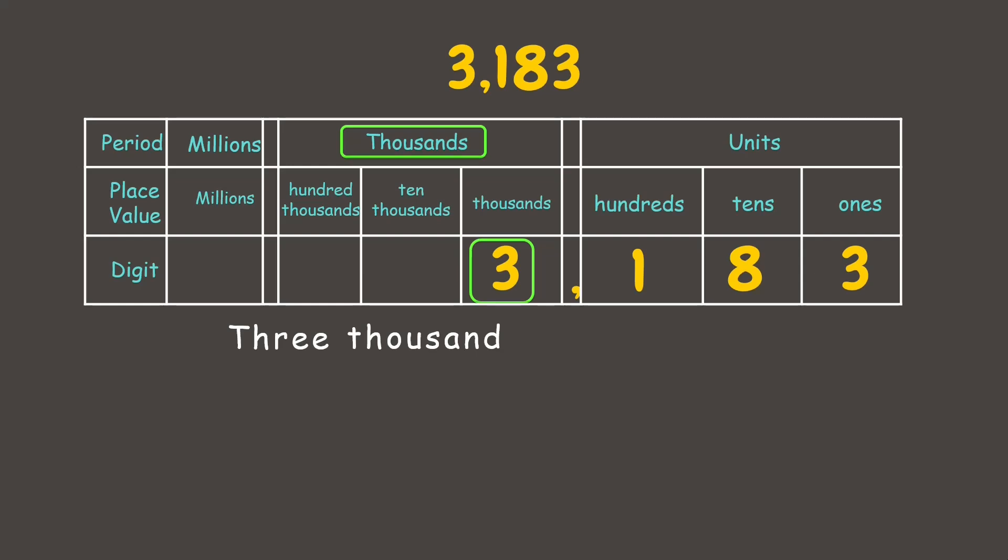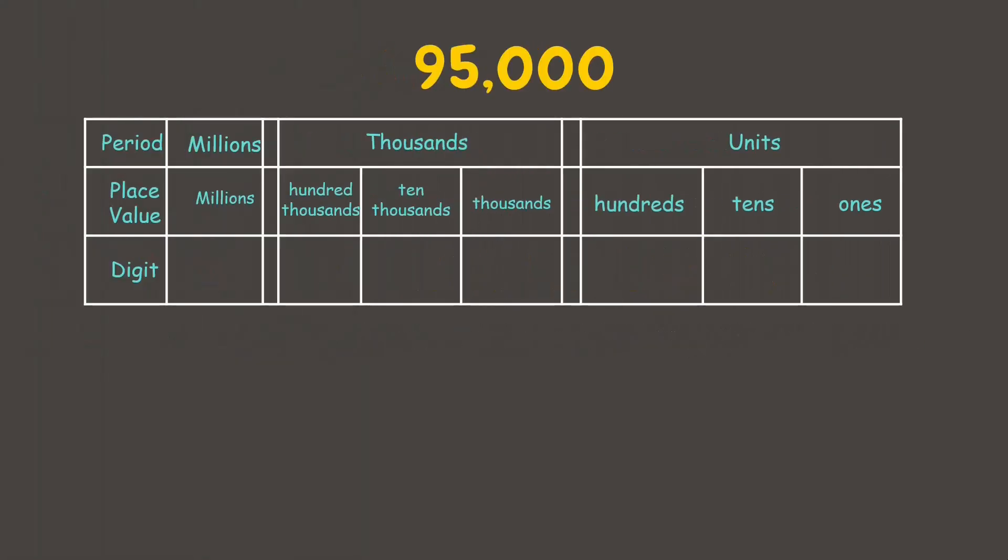Wonderful! Let's try another one. Let's place its digits in their correct place value. First we have 95 under the thousands period, so that will be 95 thousands. And since there's no more under the units, this is now how we read the number. It's 95 thousand.